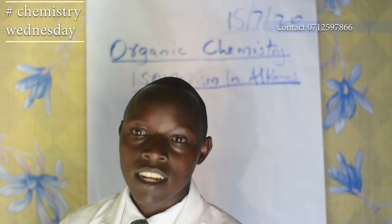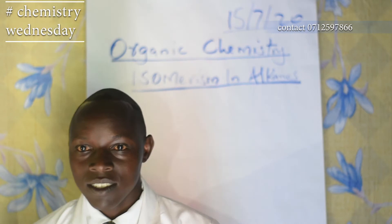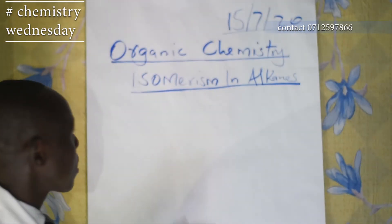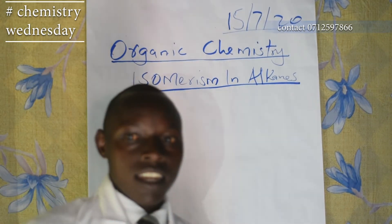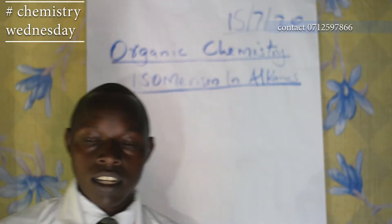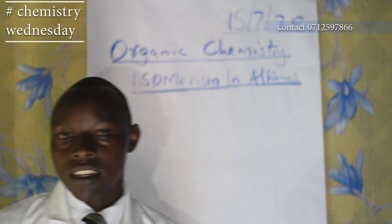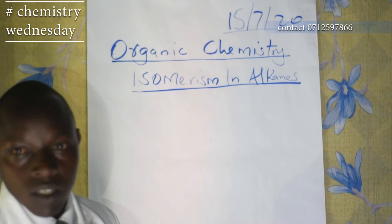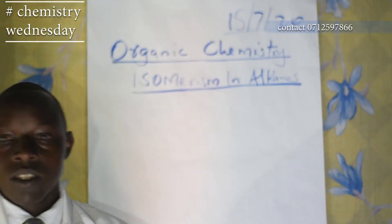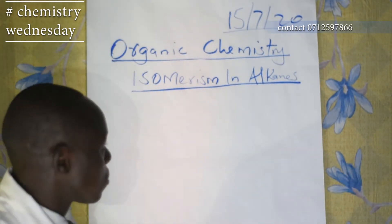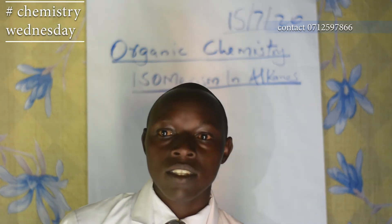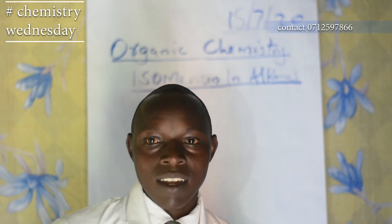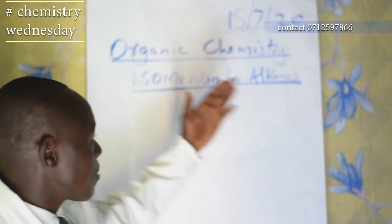So those who have tuned in already, welcome, God bless you. Let's go to our normal business. We have been doing organic chemistry and last week I did an introduction to this topic. We also did the nomenclature of alkanes — we looked at one part of alkanes, that is the nomenclature. Today I want us to do isomerism. So isomerism in alkanes.